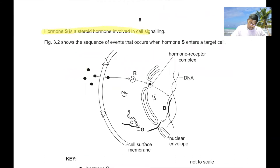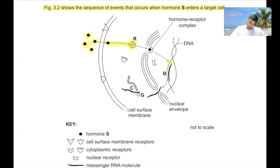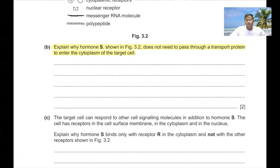Hormone S is a steroid hormone involved in cell signaling. As shown in figure 3.2, hormone S enters the target cell directly, binds to a receptor in the cytoplasm, causes transcription and then translation, and a protein is produced. Hormone S does not need a transport protein to enter the cytoplasm because it is hydrophobic and small in size — it can cross the hydrophobic core of the phospholipid bilayer directly.